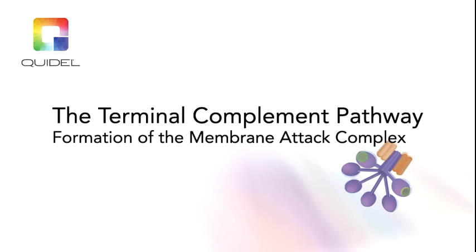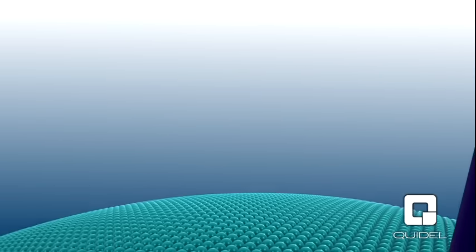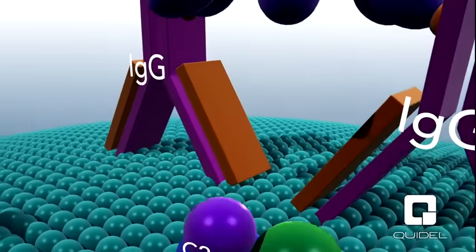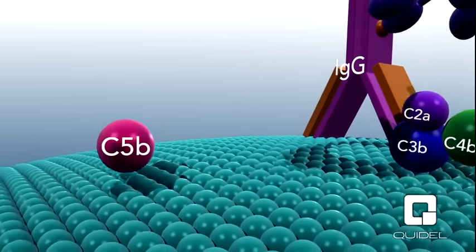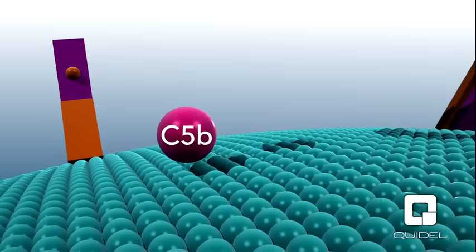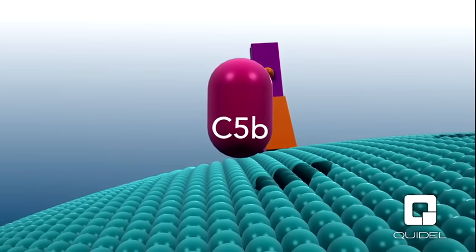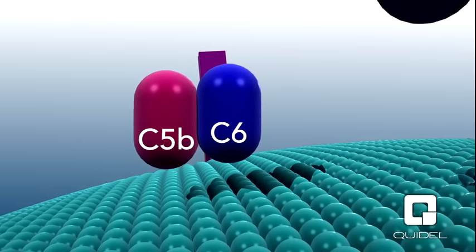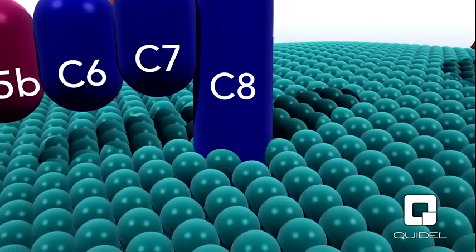One of the best known host defense functions of the complement system is its ability to lyse many bacteria, enveloped viruses, and nucleated cells. Lysis is mediated by a large macromolecular structure called the membrane attack complex, or MAC. The MAC is formed through the terminal complement pathway, which starts with the generation of C5b. C5b associates with C6, C7, and C8, forming a large multimolecular complex that associates with and begins to disrupt the cell membrane.